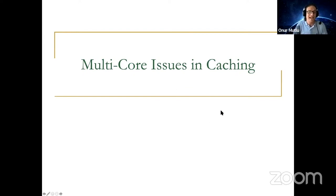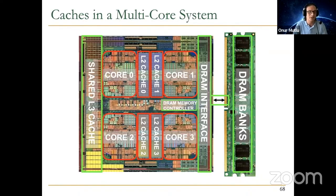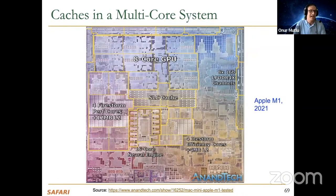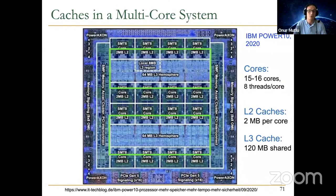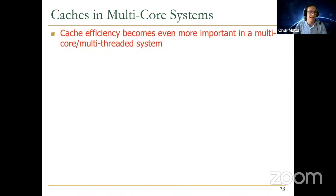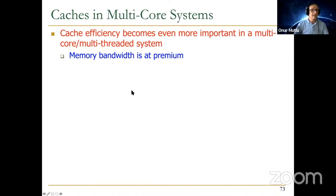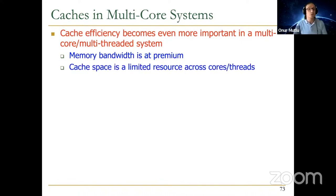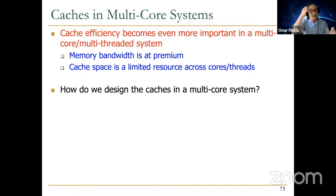So, multi-core issues in caching — I think this is very interesting. As you know, all systems today are multi-core systems, and caches are even more important in multi-core systems. We have multi-core multi-threaded systems with 120 to 128 threads accessing many caches, and that's true for GPUs also. Cache efficiency becomes even more important in a multi-core and multi-threaded system. Memory bandwidth is at premium, and cache space is a limited resource shared across many cores and threads.